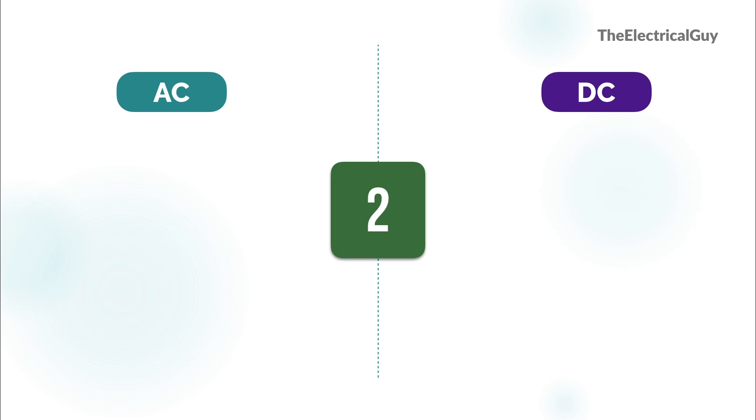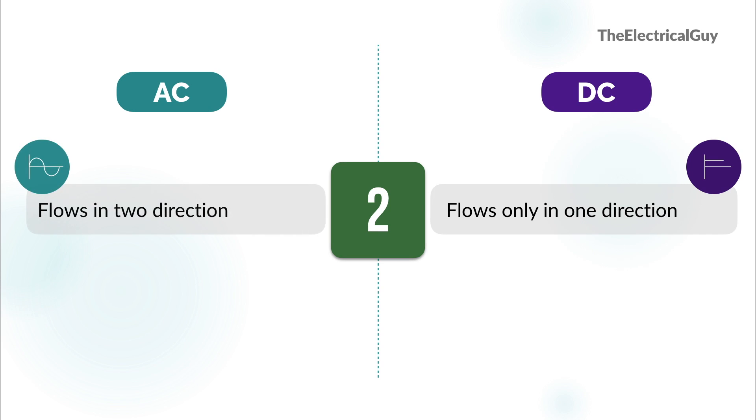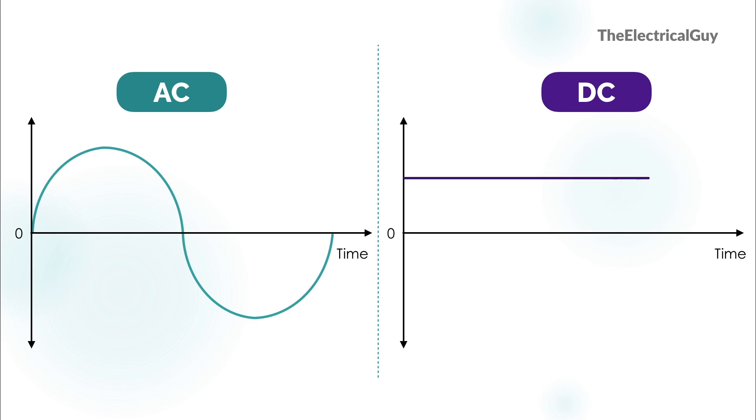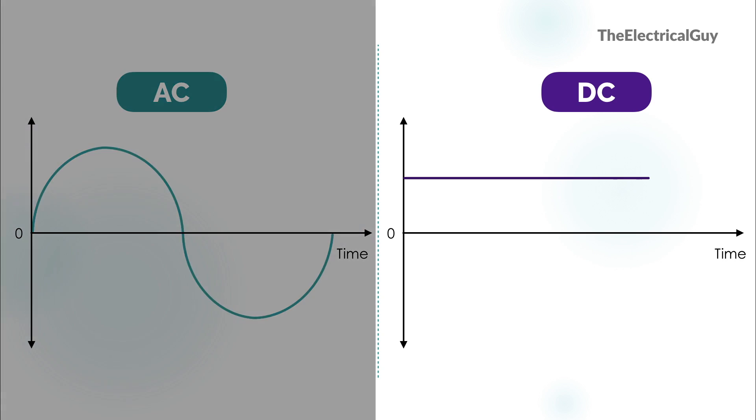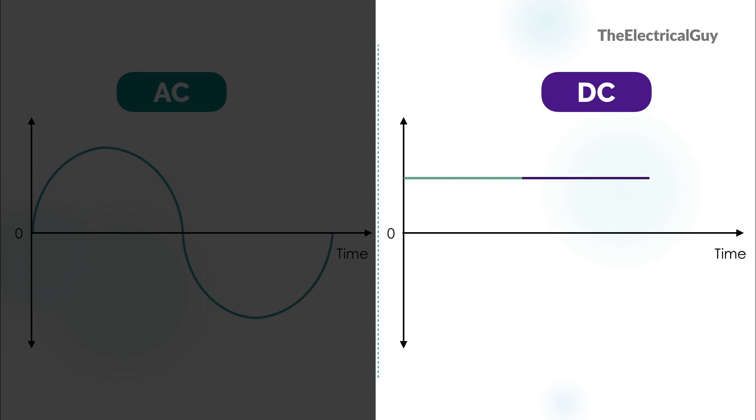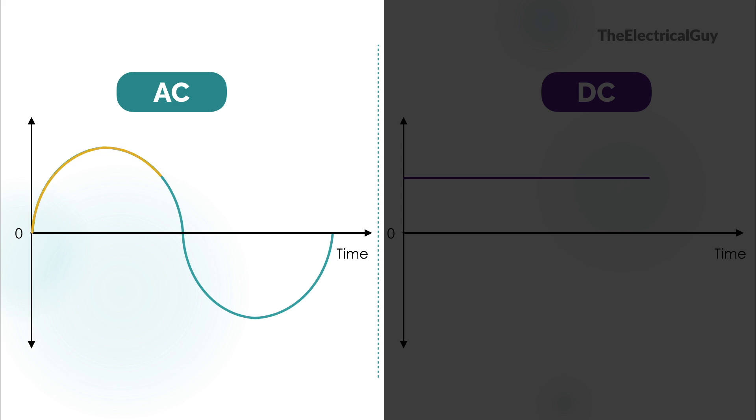Second point is direct current flows only in one direction whereas alternating current flows in two directions. When I say two directions I mean positive and negative. If you look at the waveform of DC it is always in positive side whereas in AC half portion is in positive side and half is in negative side.